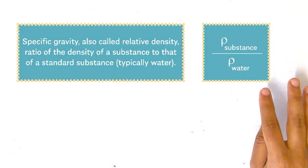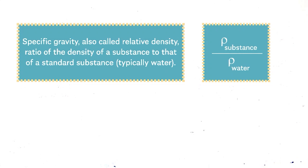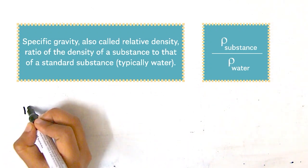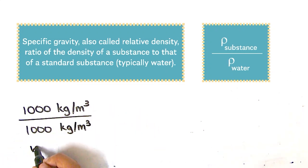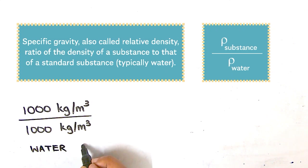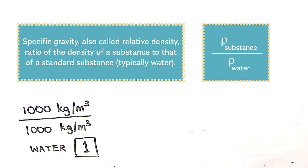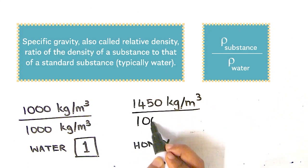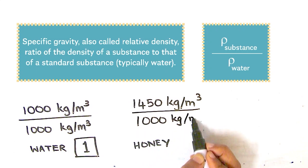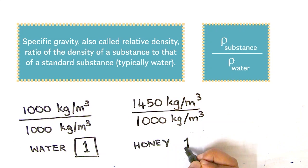Relative density is the ratio between the density of any substance and a standard reference. For liquids, the standard is water. Water's specific gravity is 1. For honey, specific gravity equals honey density divided by water density, which gives 1.45. So honey's specific gravity is 1.45.